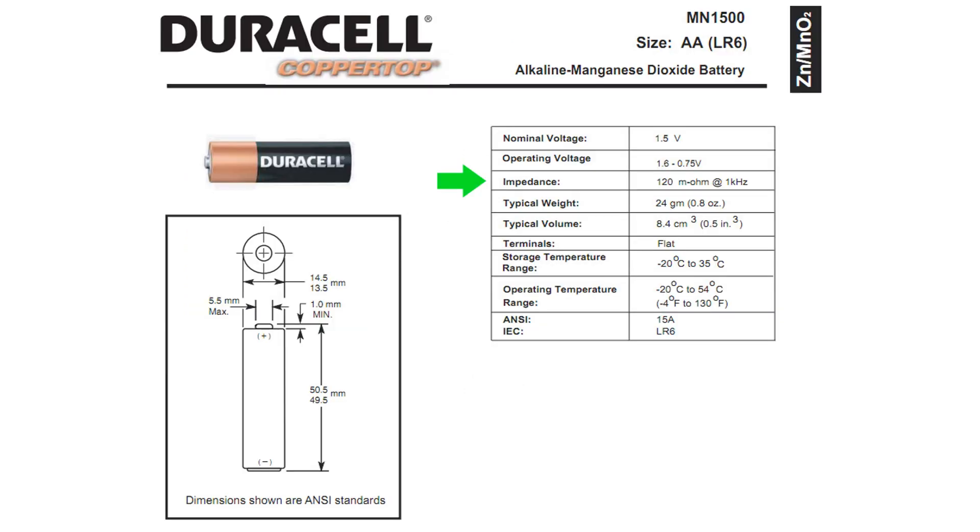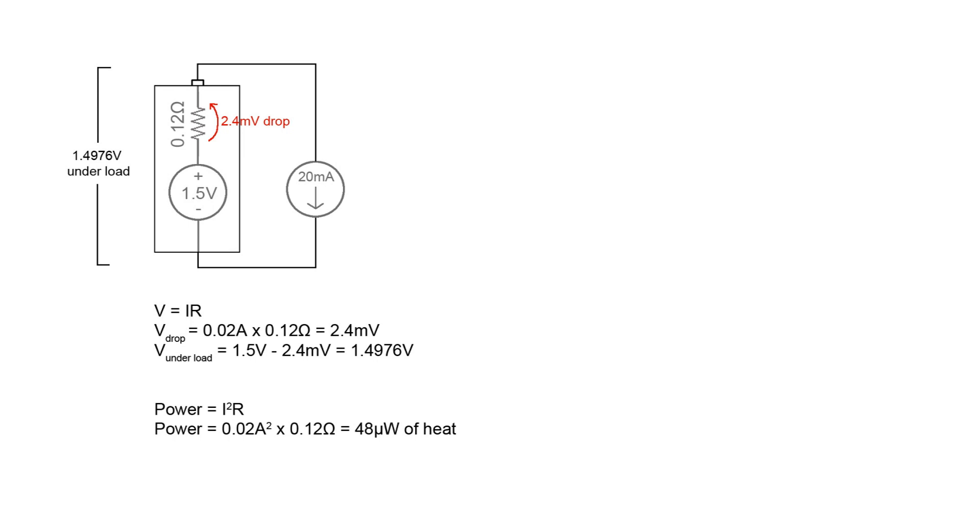For a typical AA alkaline battery the equivalent series resistance is 120 milliohms. When you put a load on the battery this resistance will cause a drop in voltage and it will generate heat within the battery. For example, a low power device like a TV remote control might draw 20 milliamps. This would cause a 2.4 millivolt drop which is nothing and generate 48 microwatts of heat in the battery which is also trivial.